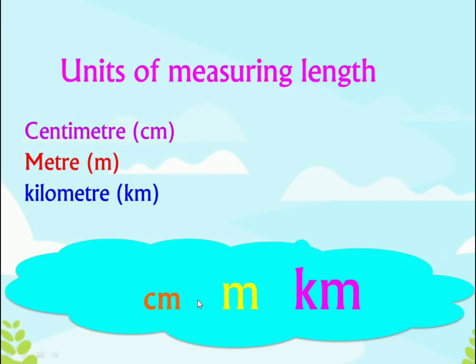Centimeter is used for measuring small items such as your book, ruler, bag, and so on. Meter is used for measuring things such as the length of a board, the length of a room, and so on. Kilometer is used for measuring long distances such as a road or the distance between two cities and so on.